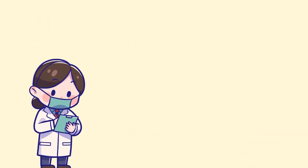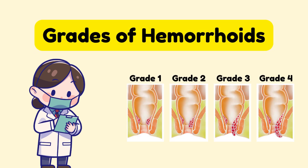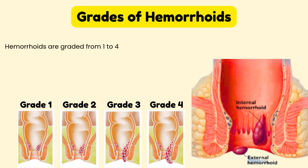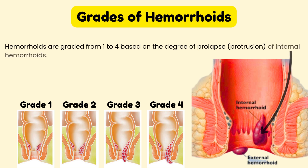Now let's get to the main topic: grades of hemorrhoids. Hemorrhoids are graded from 1 to 4, based on the degree of prolapse — protrusion — of internal hemorrhoids.